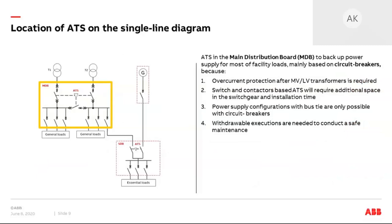ATS based on circuit breakers is usually used in main distribution boards to provide continuity of power for most facility loads. Circuit breaker-based ATS is the preferable choice because overcurrent protection is required after the medium voltage/low voltage transformer, and this is integrated in the ATS. Using a switch or contactor-based solution would require additional space and installation time. Some power supply configurations with a tiebreaker — for example made with IMA — are only possible with circuit breaker-based ATS. Additionally, circuit breaker-based ATS can be in withdrawable execution to provide visual isolation for maintenance.